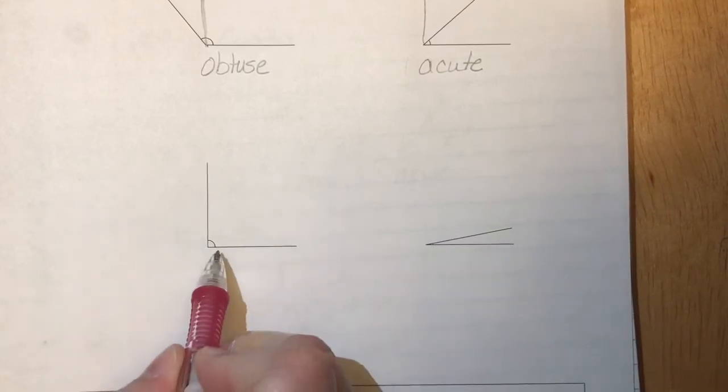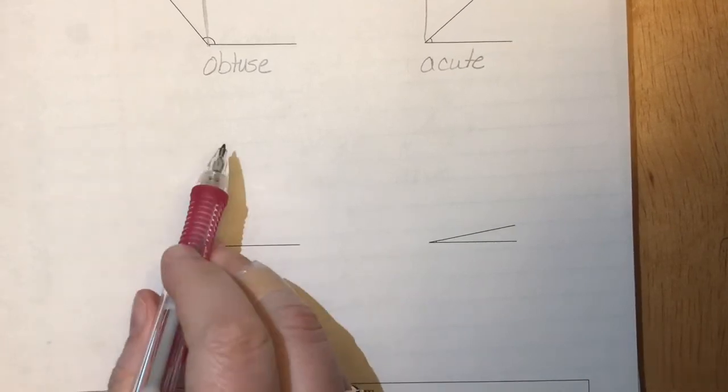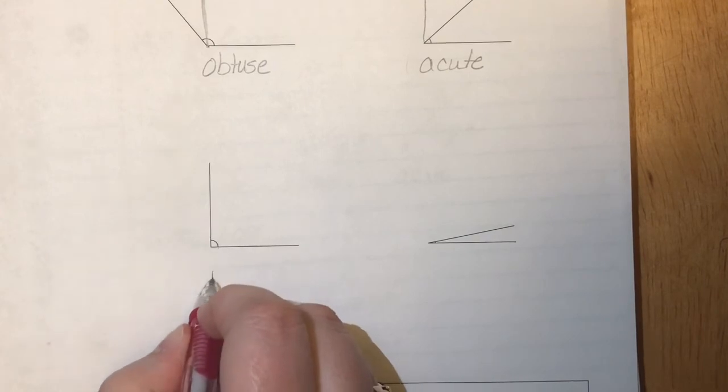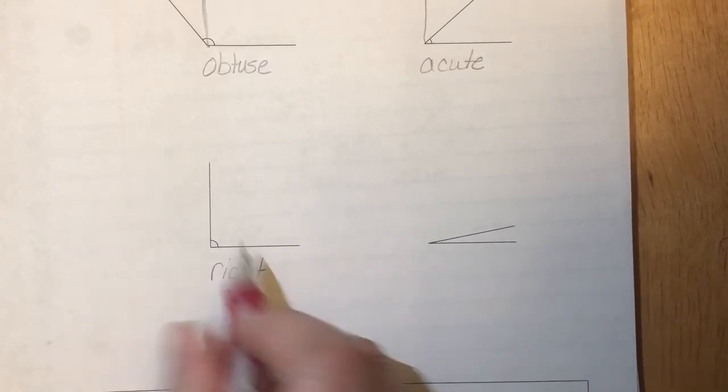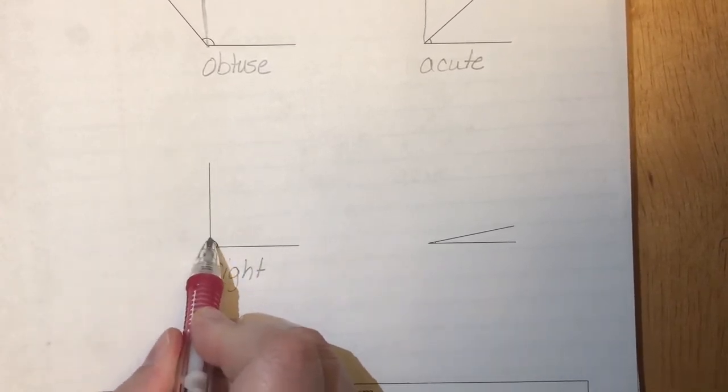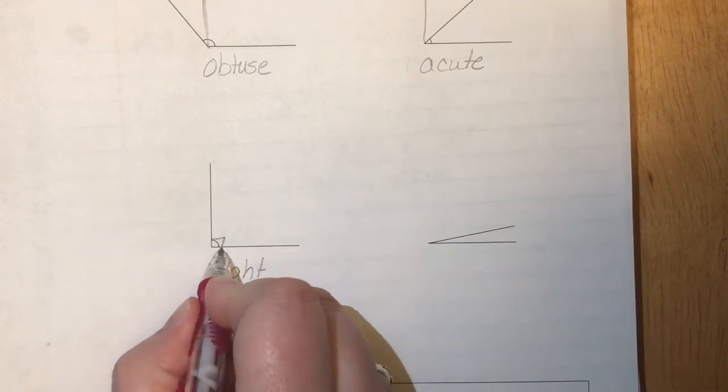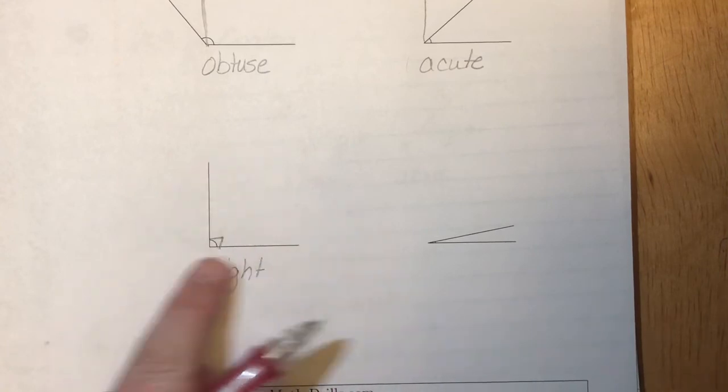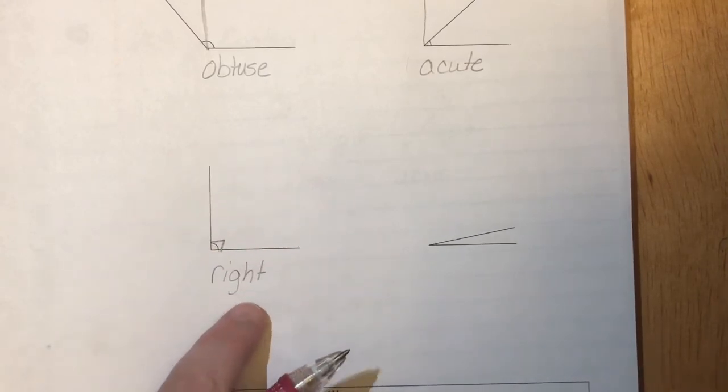Did you figure it out? This angle right here looks like a capital L. Nice and straight up. So this is that right angle. You'll notice here that it is curved instead of showing the square. But if you look at it, it's pretty much straight up and straight across. So that would be a right angle.